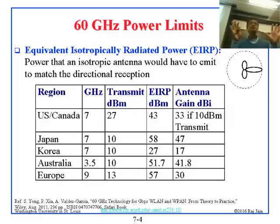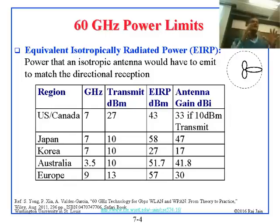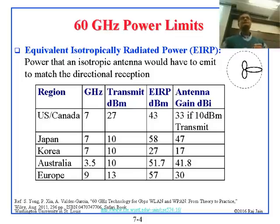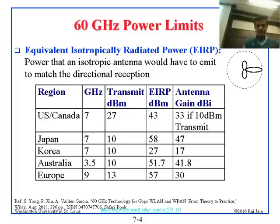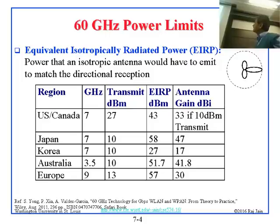Japan put the EIRP limit at 58 dBm, while Korea put the limit at 27 dBm, which is very low, and so on.